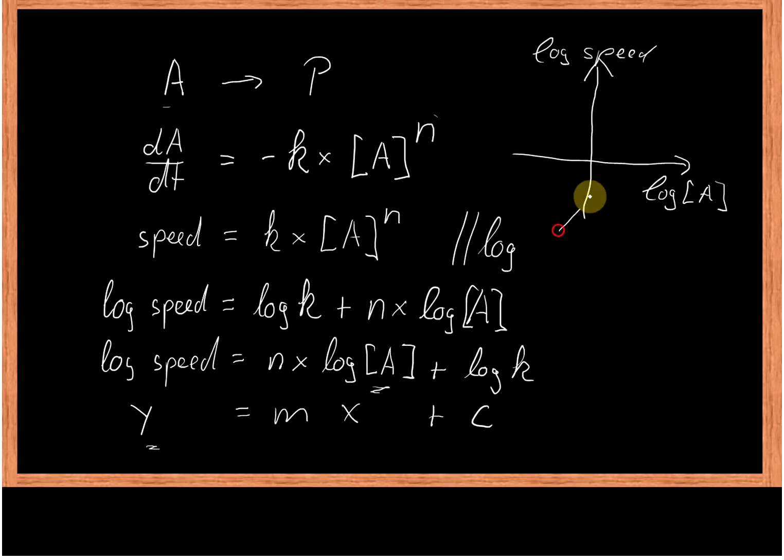So that should be a straight line. And the gradient of this straight line, this would be our m here. So the gradient of this straight line here, that is our rate order. So that would be our n that we are looking for.